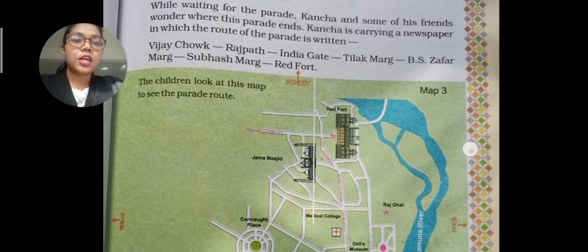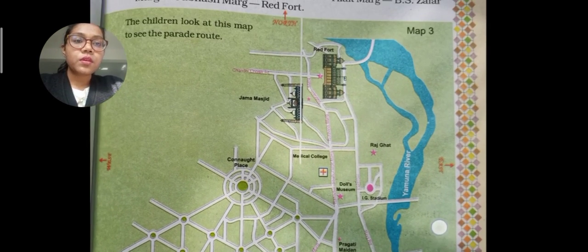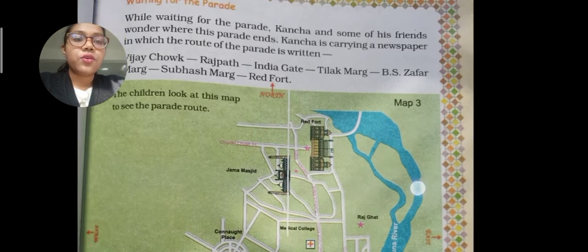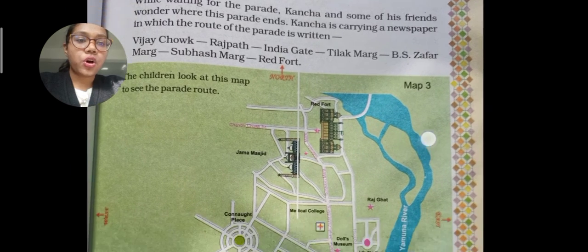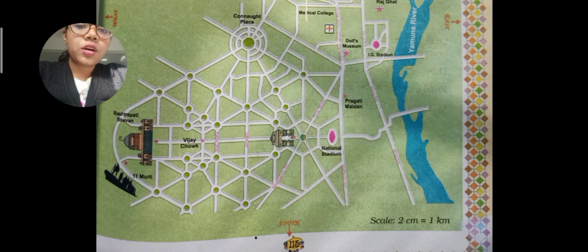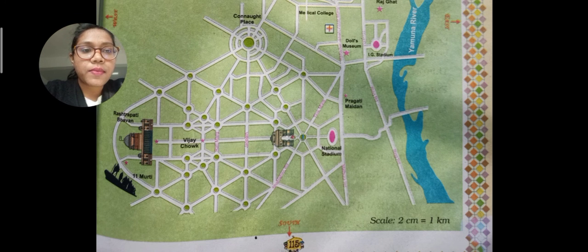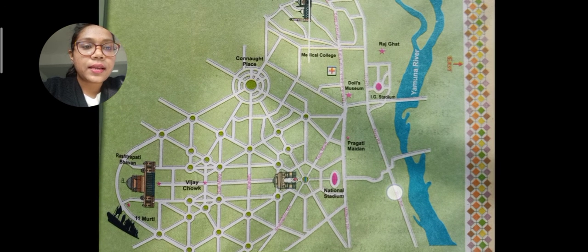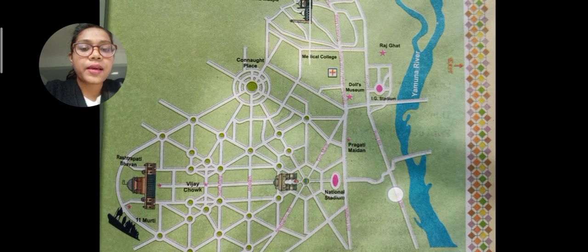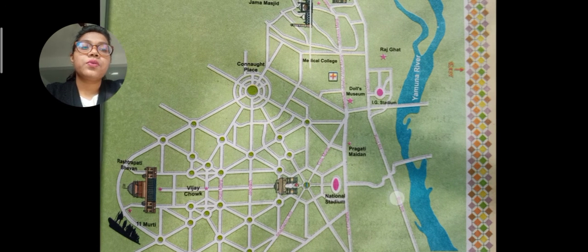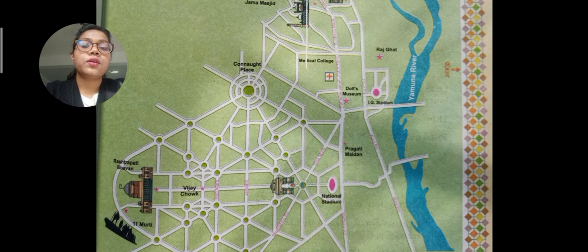Here you can see the north, south, east, and west directions on the map. You have to first find Vijay Chowk, then Rajpath Marg, then India Gate, then Tilak Marg, then B.S. Zafar Marg, Subhash Marg, and finally Red Fort. You have to follow this route on the map to see where the parade is going.